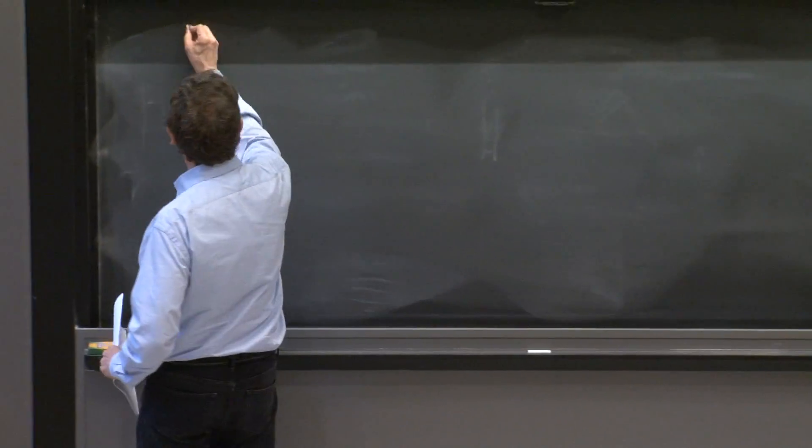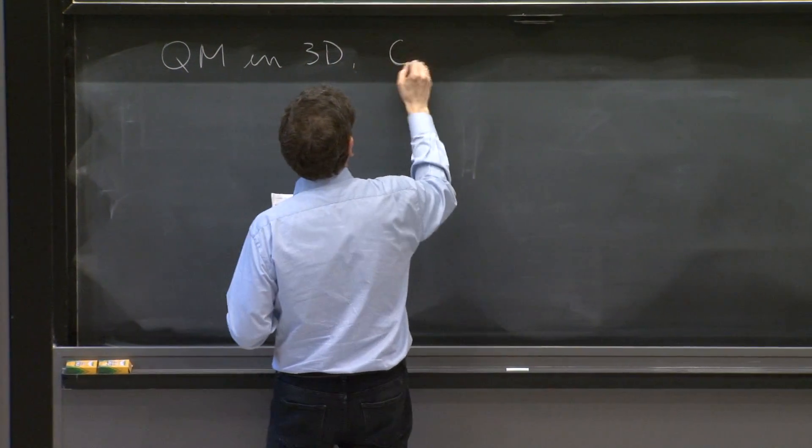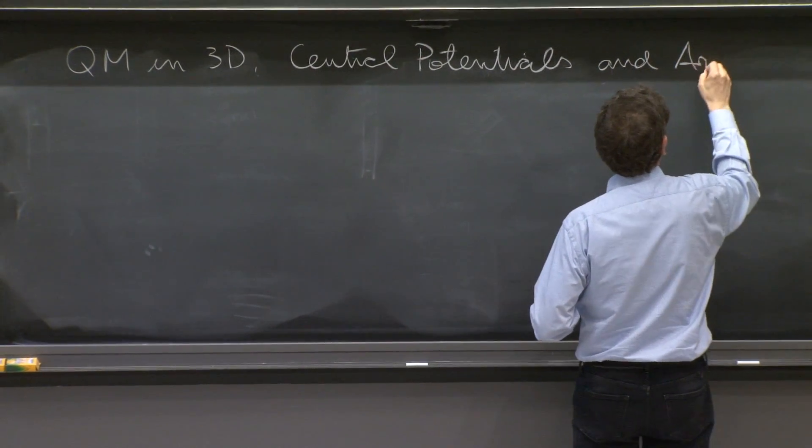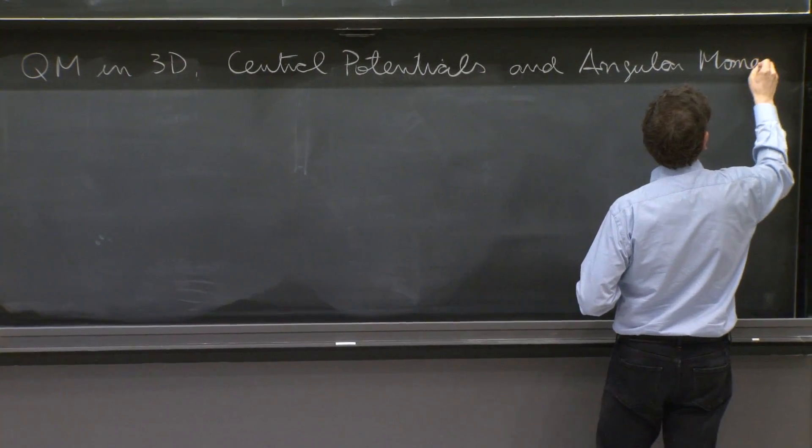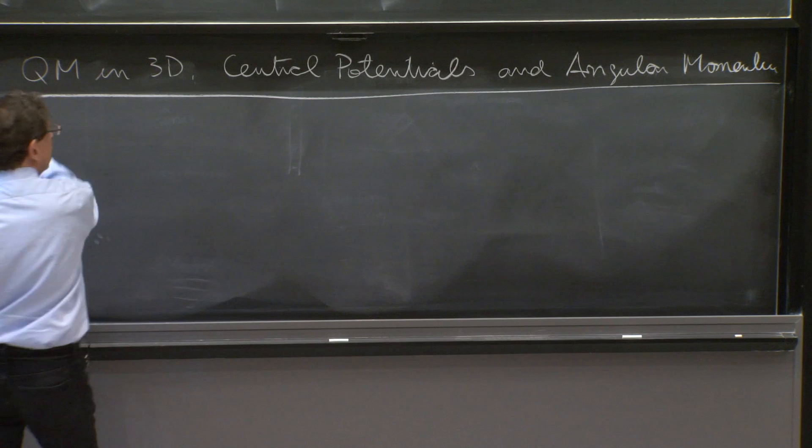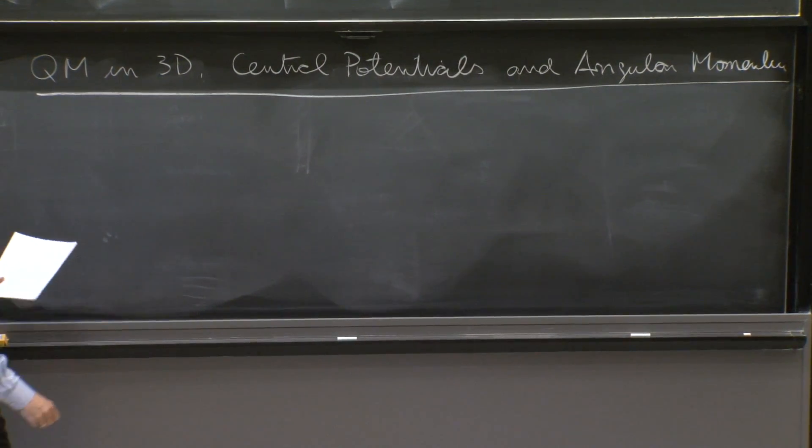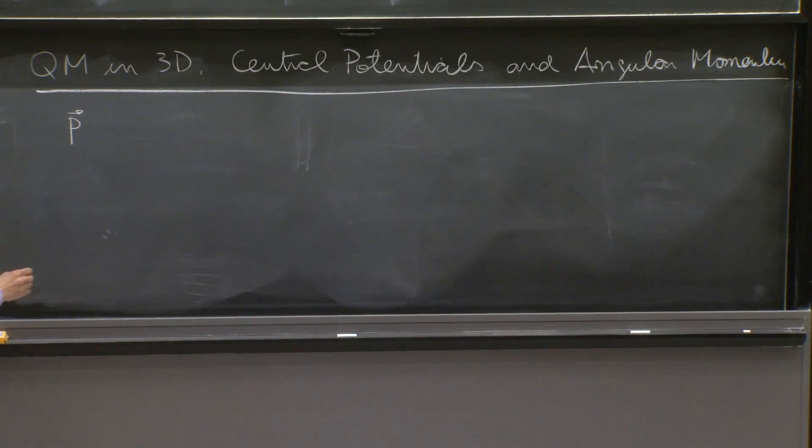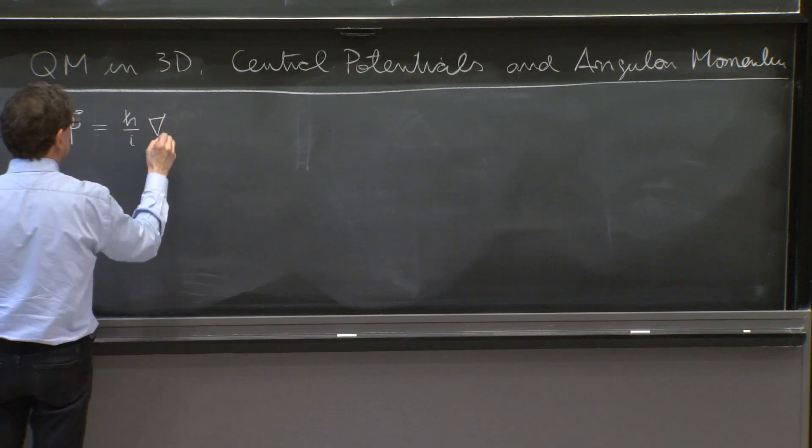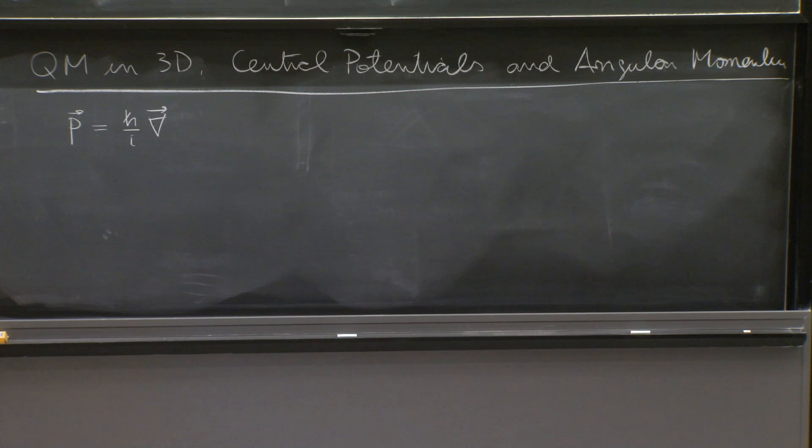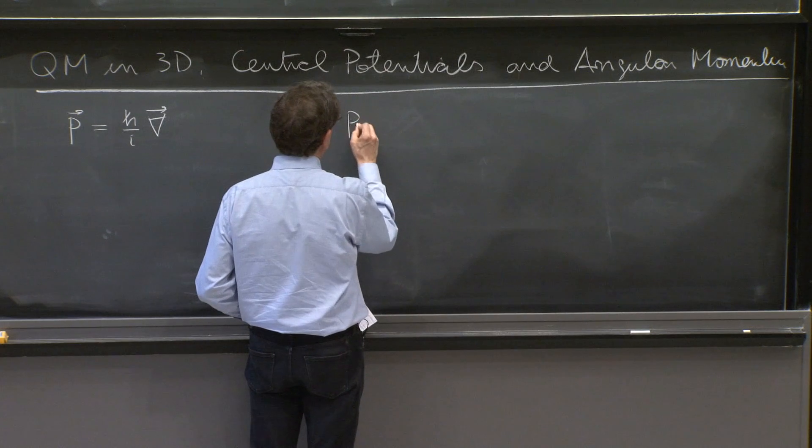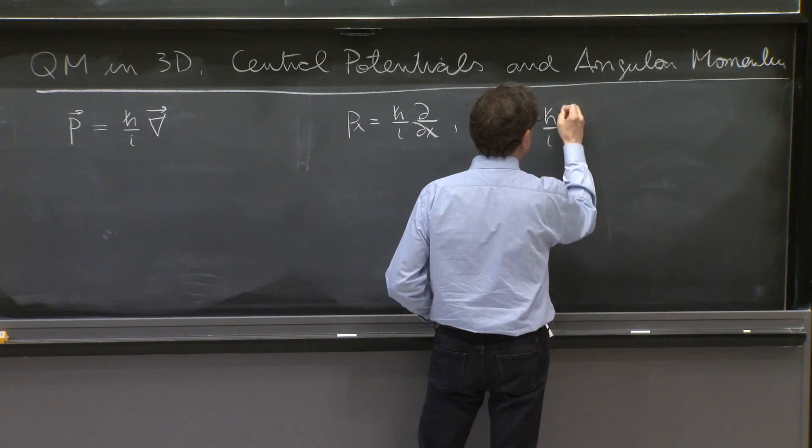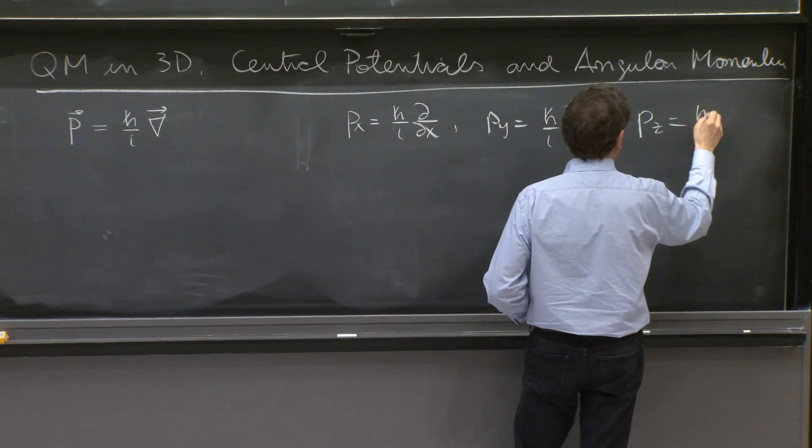So it's really quantum mechanics in three dimensions, central potentials, and angular momentum. And let's begin by mentioning that if we are in three dimensions, many things we did so far in this course, we always took the time to write them in three dimensions. So we wrote this, for example, as a generalization of the derivative form of the momentum operator, meaning there's a px, which is h bar over i d dx, py, h bar over i d dy, and pz equal h bar over i d dz.